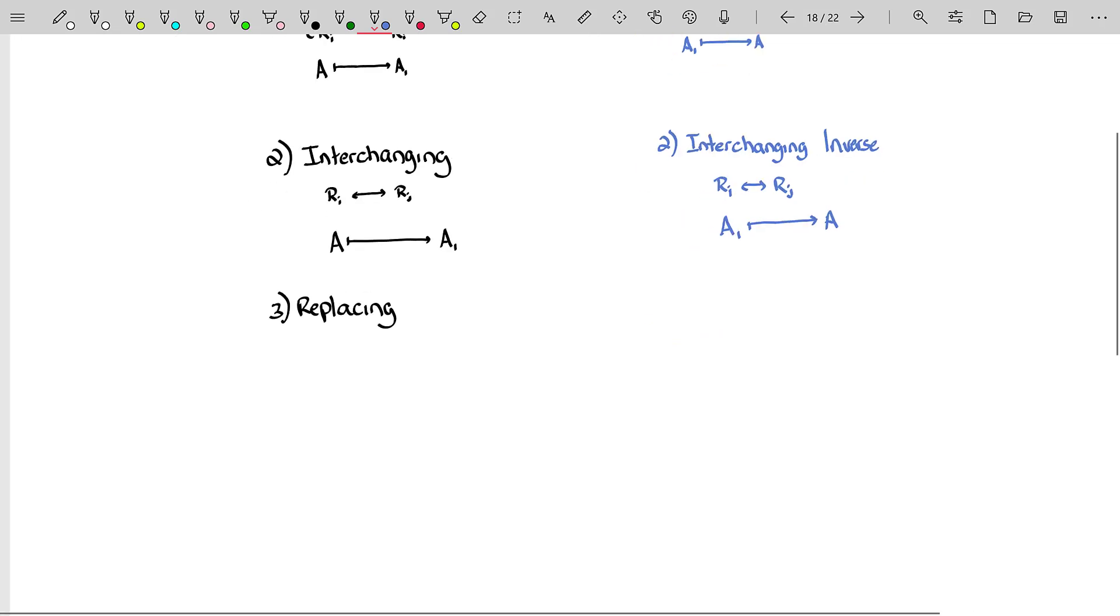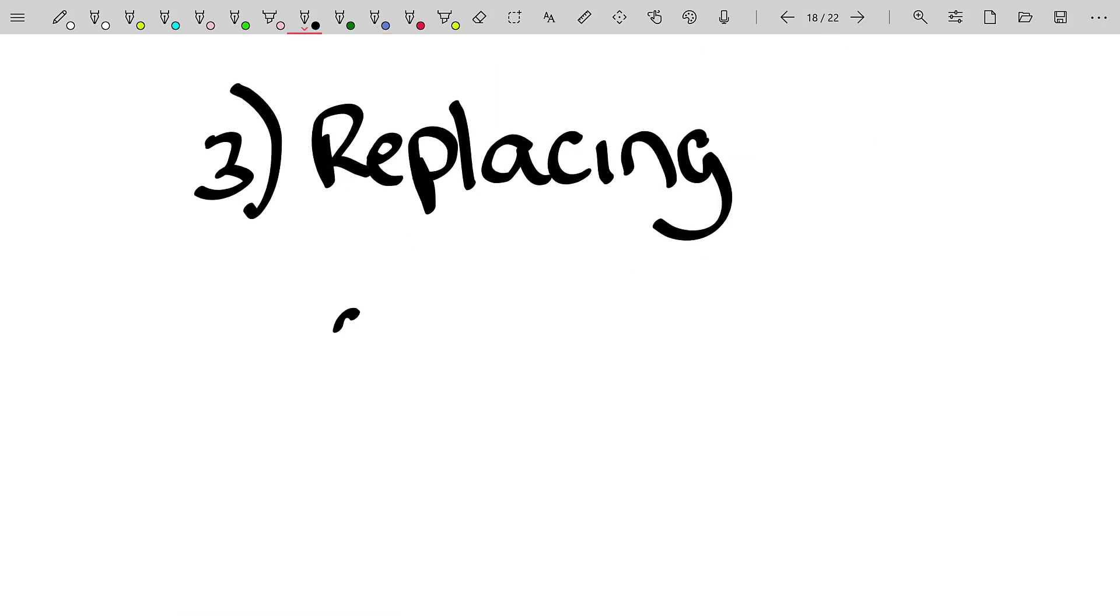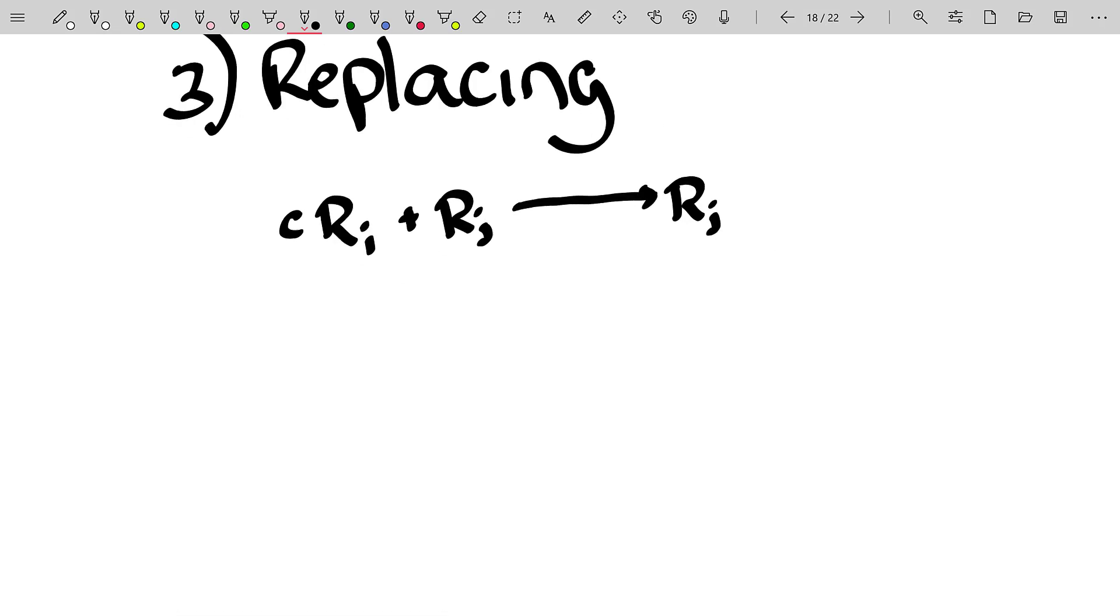Now the fun one here is row replacement. That's when you take a multiple of some row, add it to another row to become that other row. That is, we take a constant times row I, add it to row J, that will create the new row J. And again, it's row replacement or an elementary row operation. So it transforms the matrix A into a new matrix. We'll call it A sub 1. Those two matrices are row equivalent because it was just a simple elementary row operation.